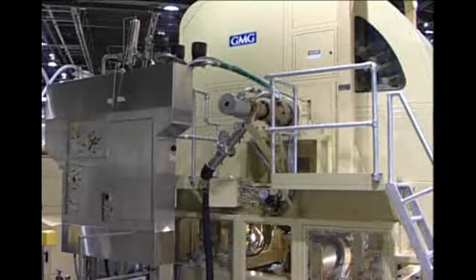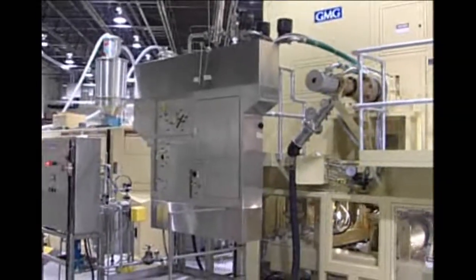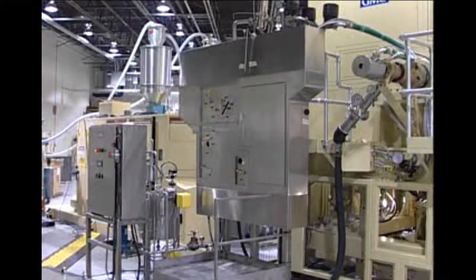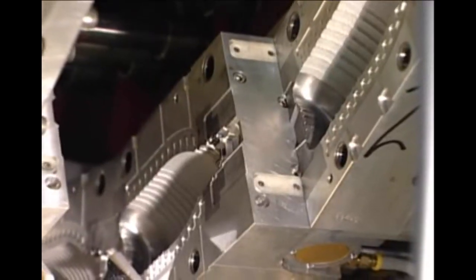GMG's patented aseptic blow molding system and process ensures that the bottle interior is completely sterilized. Using Oxonia and steam to pre-sterilize the machine, bottles are blown using sterile air, then sealed inside the molds.